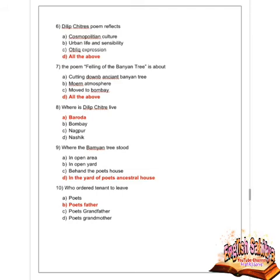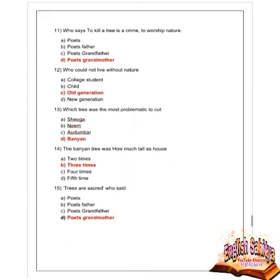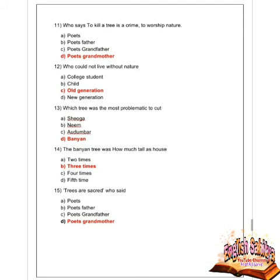Next question: who ordered the tenants to leave? Options are the poet, the poet's father, the poet's grandfather, and the poet's grandmother. Option B is correct — the poet's father. The poet's grandmother said that to kill a tree is a crime and one should worship nature.